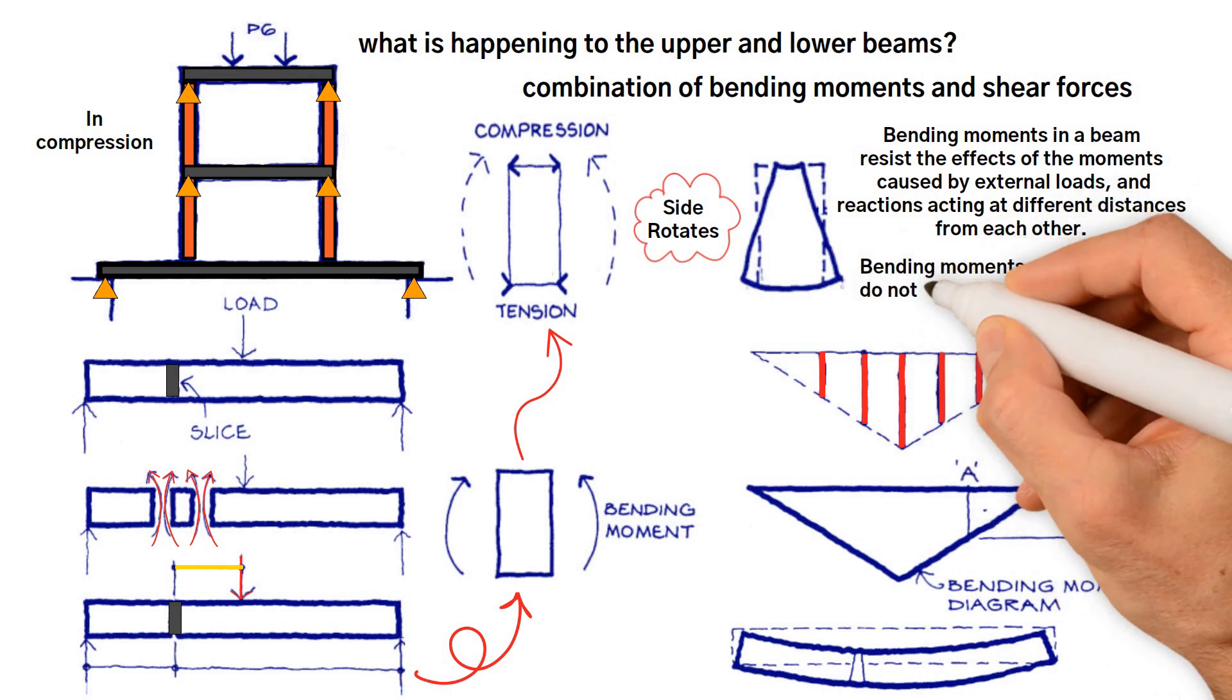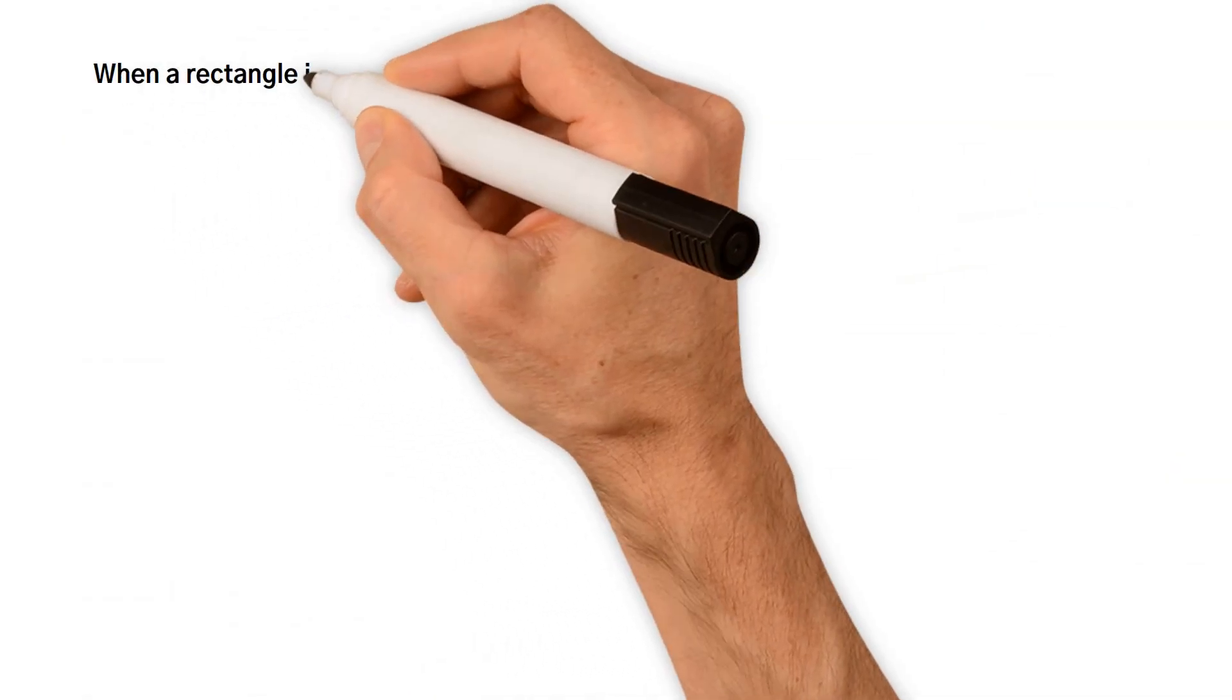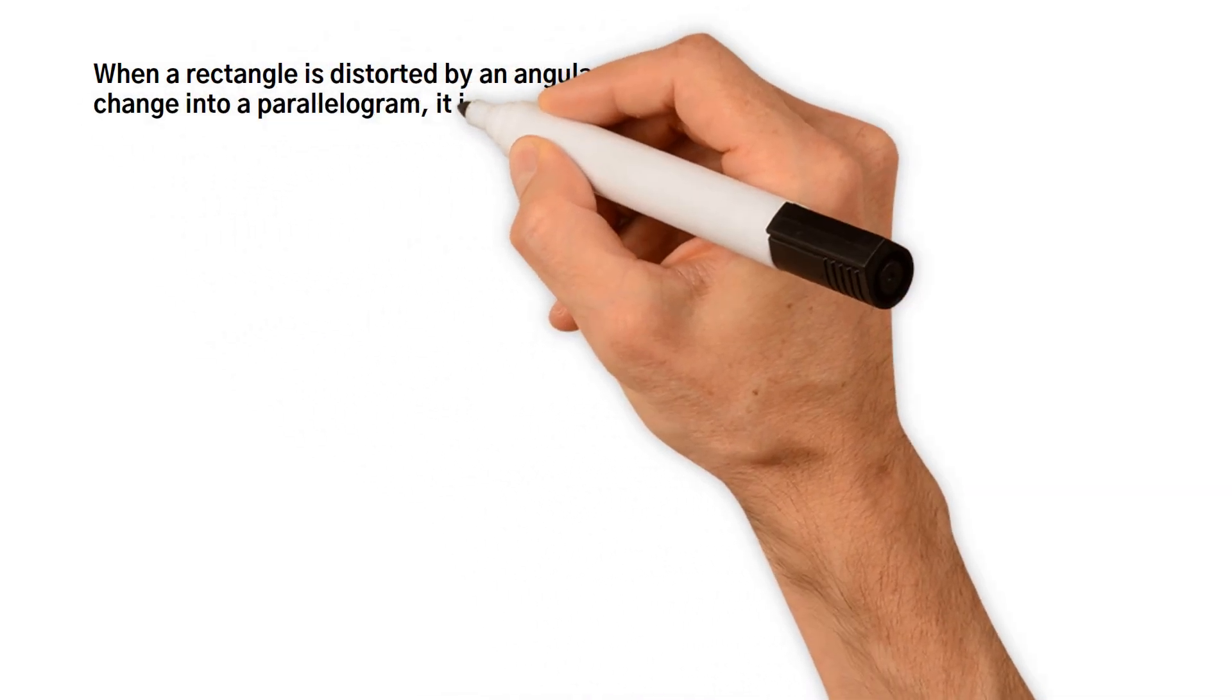Bending moments do not resist the vertical effect of loads on beams. Shear forces resist these. When a rectangle is distorted by an angular change into a parallelogram, it is sheared.